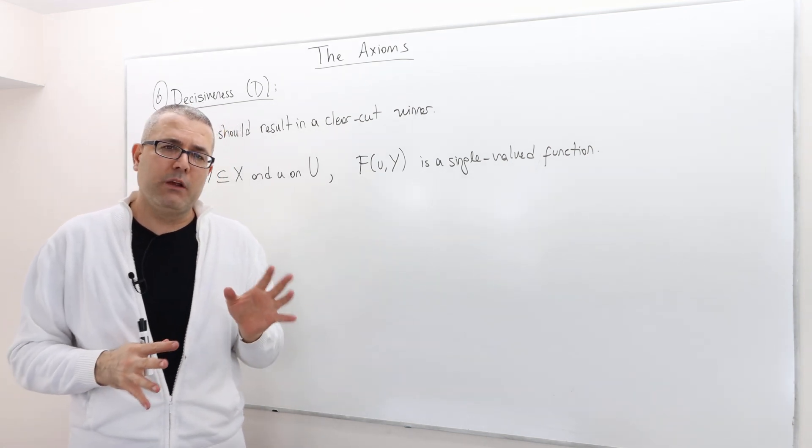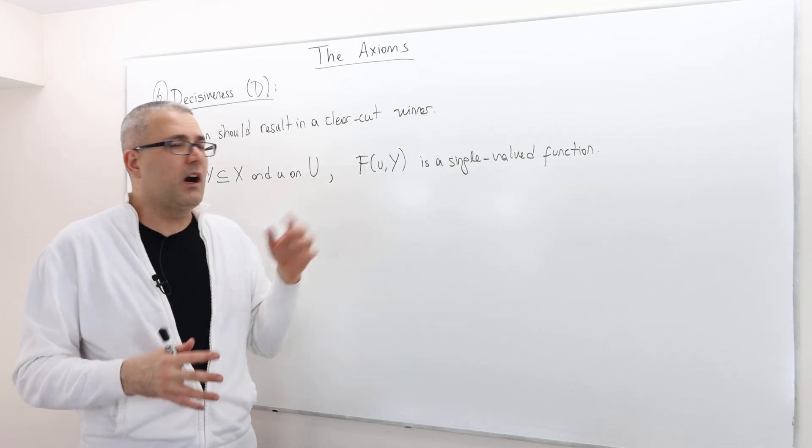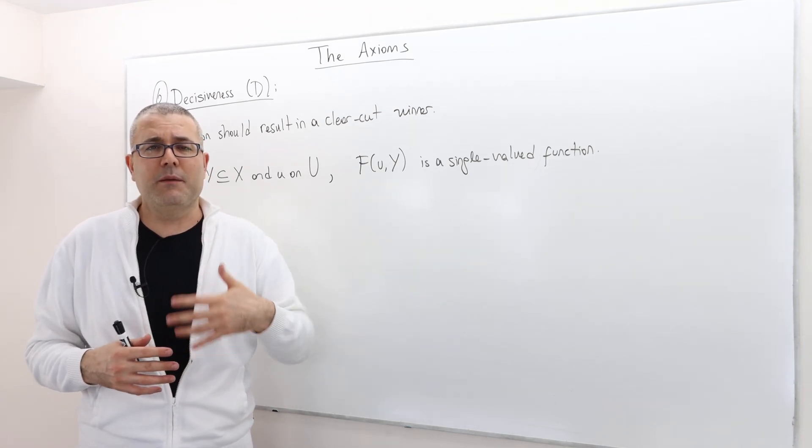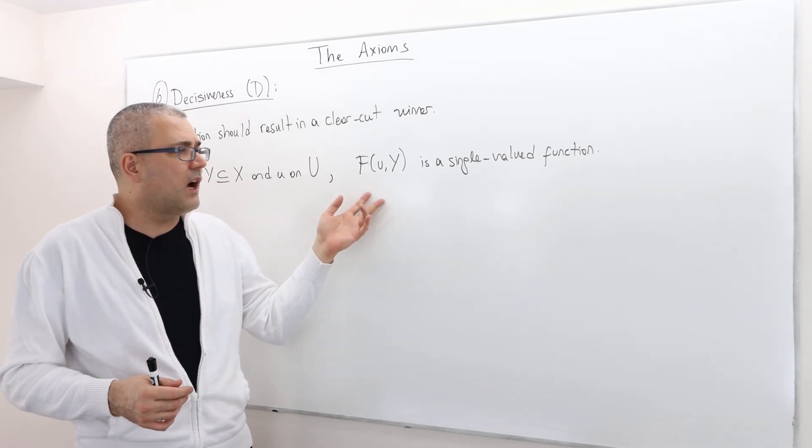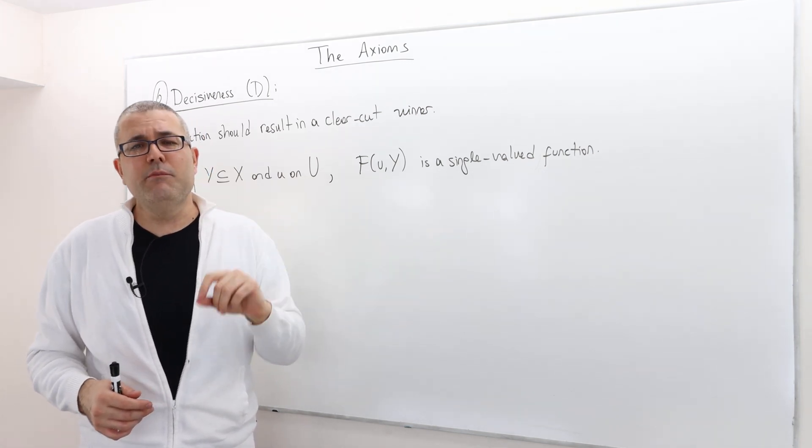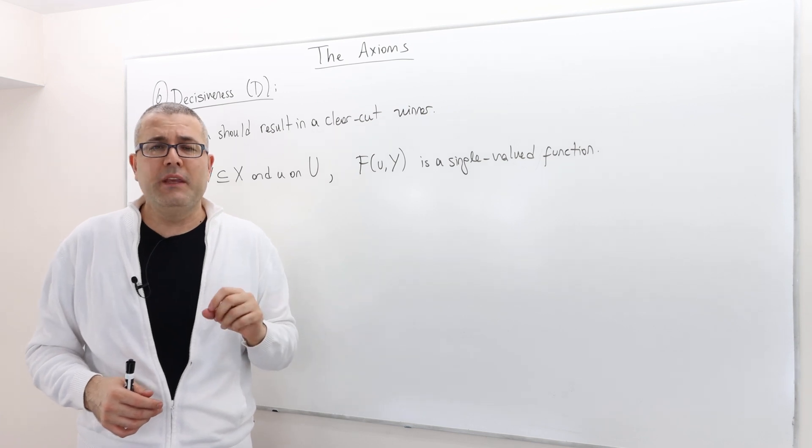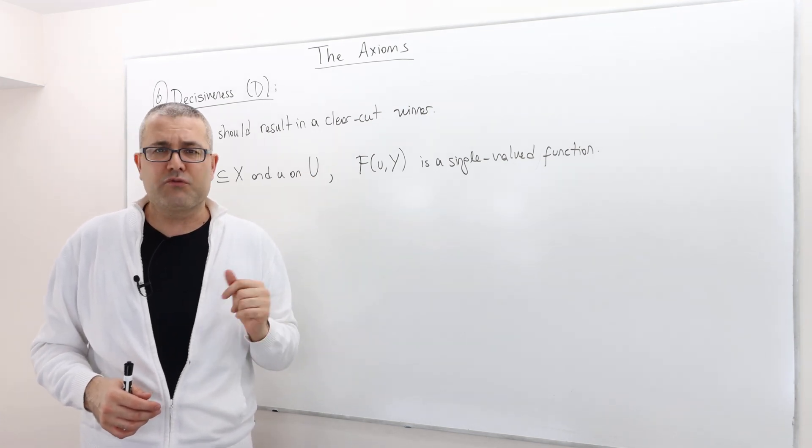If you remember, some voting rules that we discussed are correspondence, meaning sometimes they lead to multiple alternatives. But the thing is, we can always slightly modify those rules by assuming some tie-breaking rules. For example,